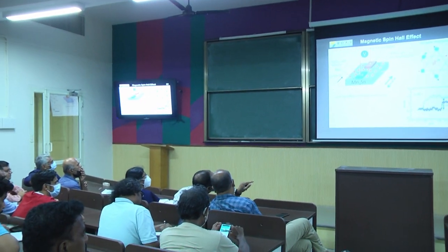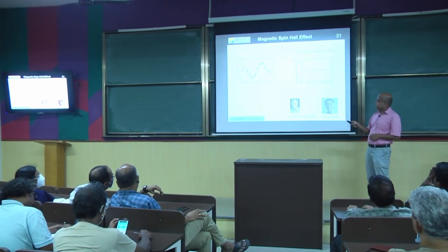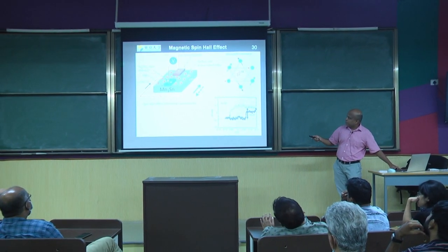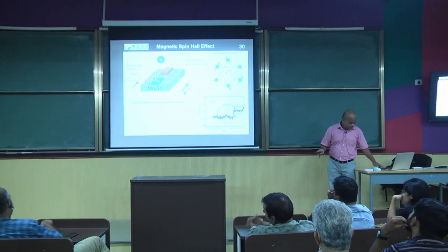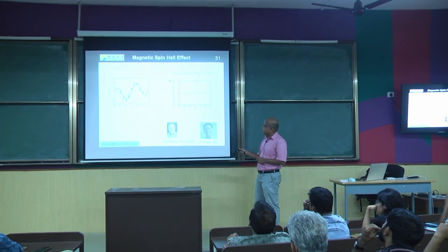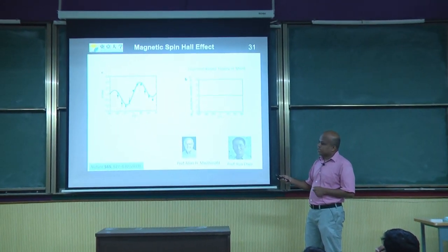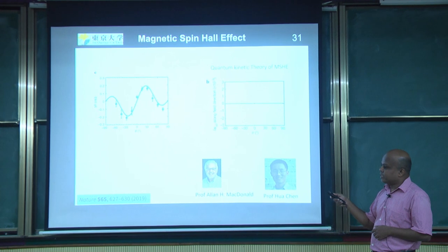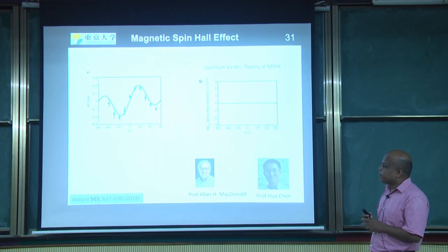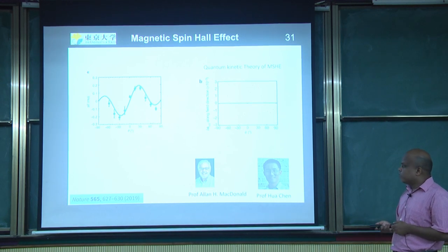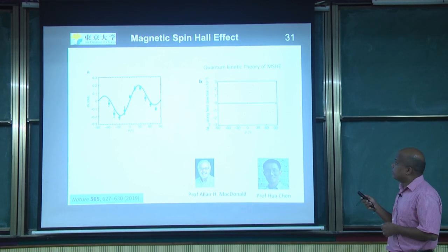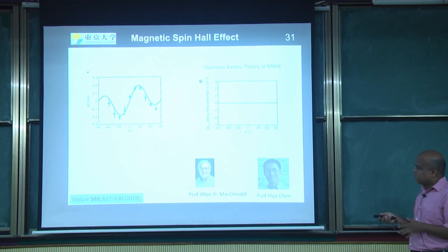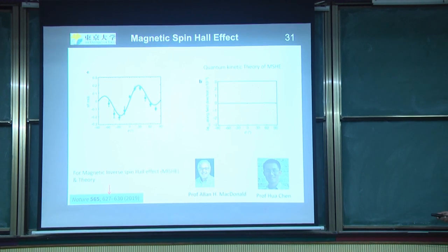We aligned the octupole moment in multiple directions. Defining 0 degrees as where current and octupole moment are parallel, we rotated in different angles and found the spin signal becomes maximum at 30 degrees. This is unusual because spin Hall effect should show only a sinusoidal dependence, but it repeats every 30 degrees. A quantum kinetic theory developed by Allan MacDonald and Hua Chen exactly reproduced this angular dependence from their model. In the interest of time I will not go into the theory details, but this multiple-moment expansion — particularly up to octupole moment — is important for Mn3Sn.